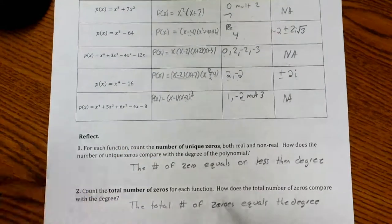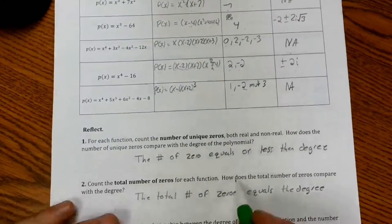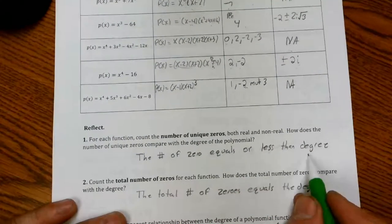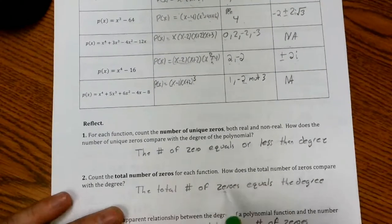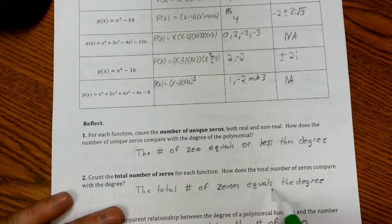Let's go down here. My unique zeros here is I've got four which is the same as. So your unique zeros, the number of zeros not counting the multiplicity, equals or is less than the degree.